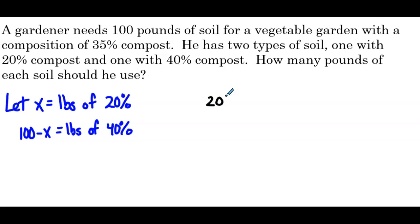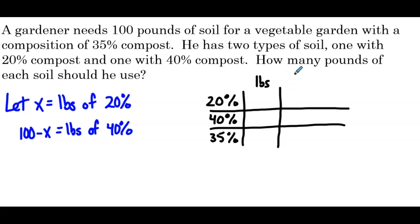So we have 20%, 40%, and our mixture is 35%. So we have pounds, we have the percent of compost, and then we have the total. So 20%, how many pounds? That's x. 40%, that's 100 minus x. And in total, 100 pounds. Percentage, so 20% in terms of decimal would be 0.2. 40% would be 0.4. And 35% would be 0.35. So our total here, we have 0.2x, 0.4 times 100 minus x, and 35.